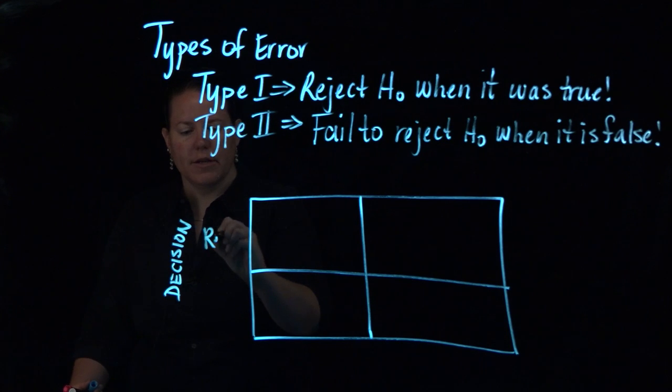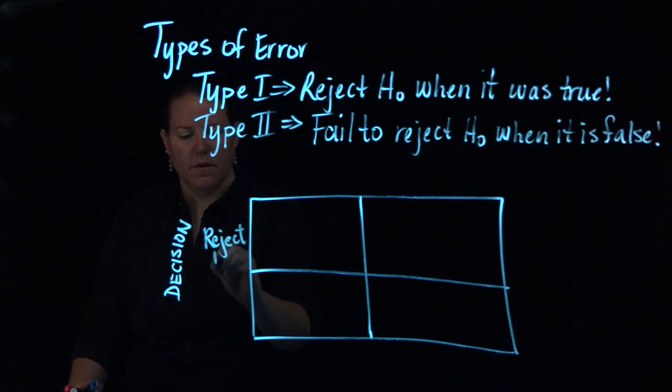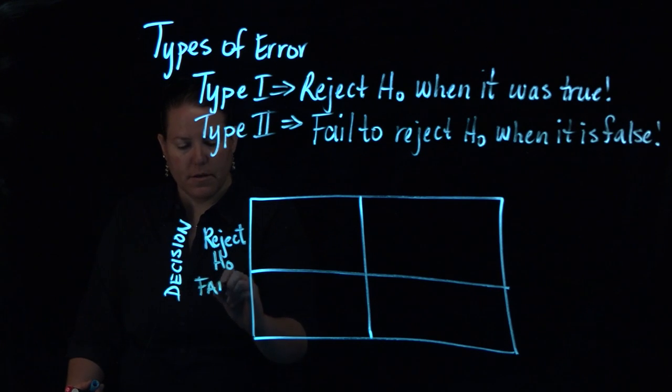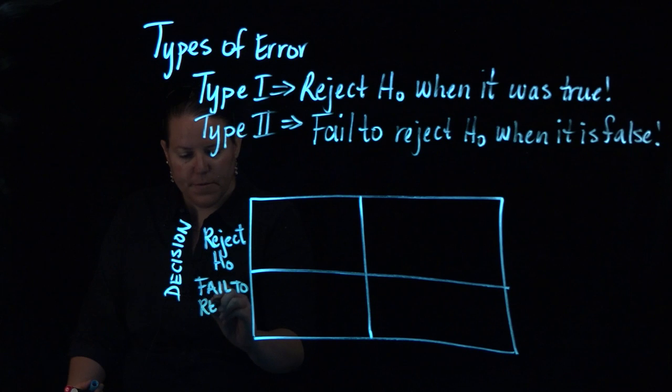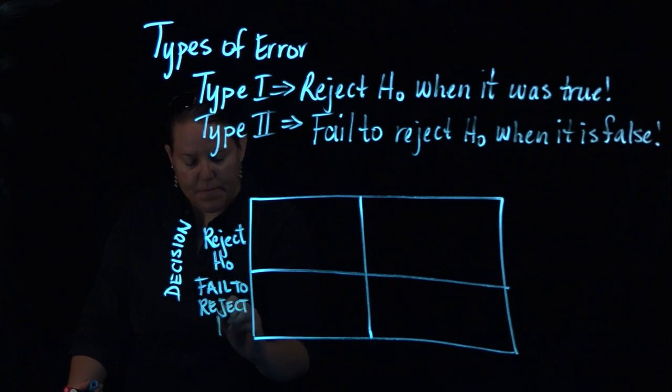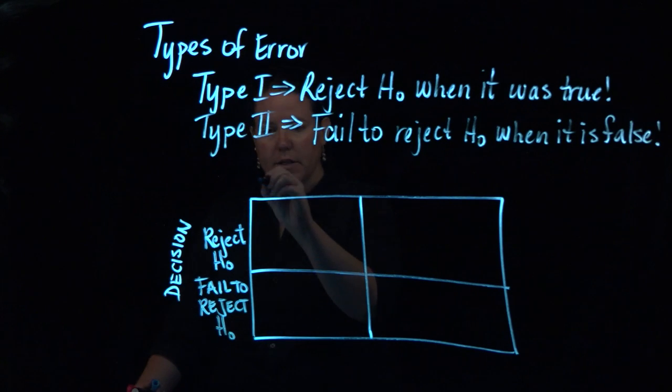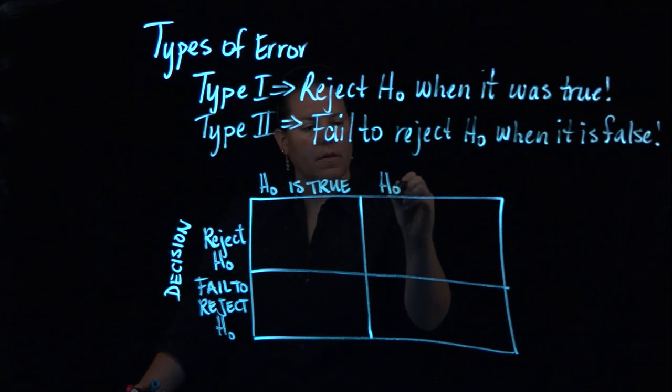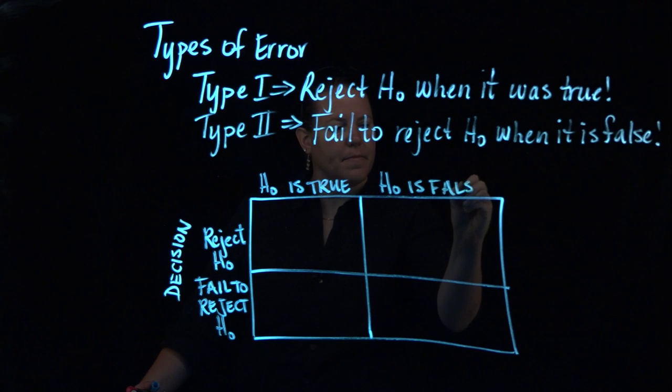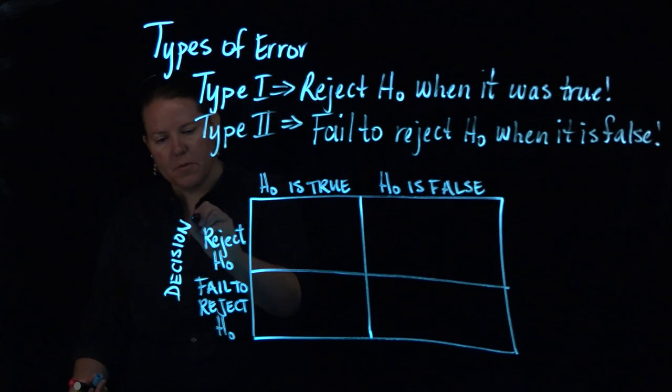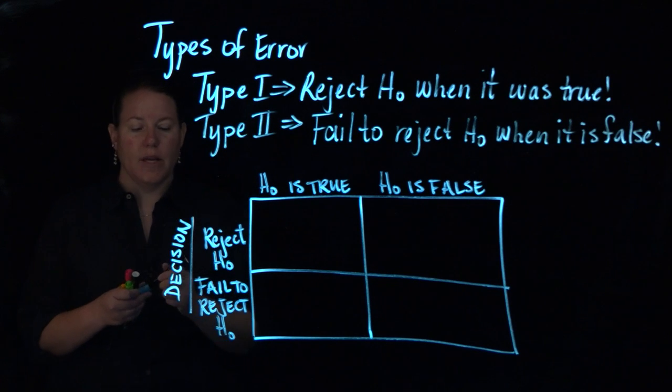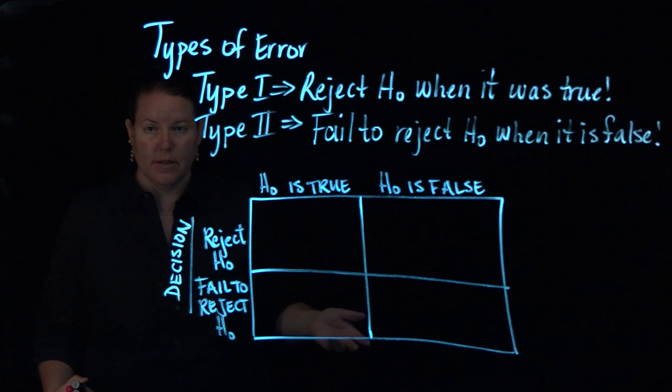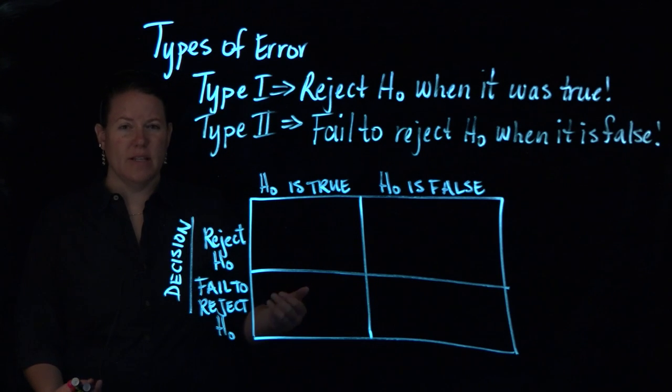So you can either reject the null or fail to reject the null. And on the top here you could say the null is true or the null is false. Those are kind of the possibilities, right? Because when we make decisions in hypothesis testing, we're making them about the null. We are not making them about the alternative hypothesis. Statisticians would not really ever say the alternative hypothesis is true or false. We would only talk about the null.